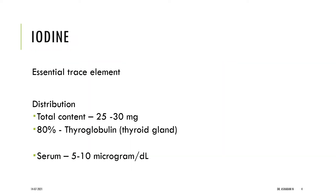Iodine is an essential trace element. Total body content is about 25 to 30 mg. 80% of it is concentrated in the thyroid gland and it is seen in thyroglobulin protein. The serum levels of iodine is 5 to 10 micrograms per deciliter.